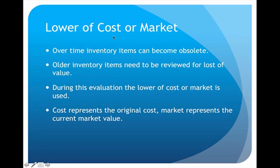Picking the lower value is the more conservative approach. It's better to underestimate the value of inventory, because if you end up selling it for the full price that would be a positive adjustment. But if you overestimate and don't sell it for that price, you'd have to make a negative adjustment. So the conservative thing to do is always go with the lower price by applying the lower of cost or market.